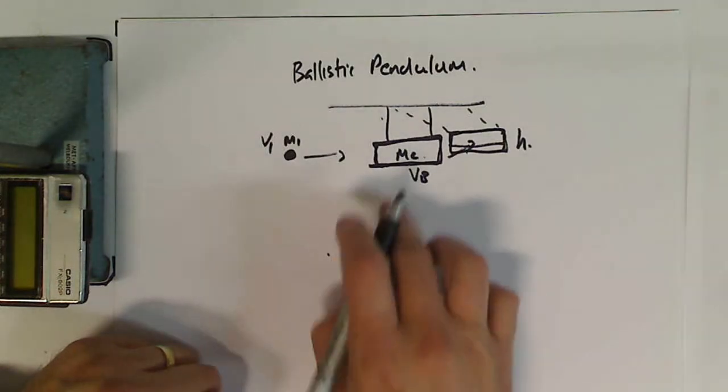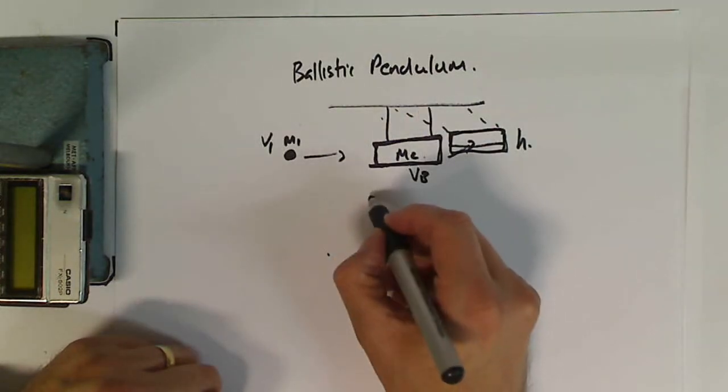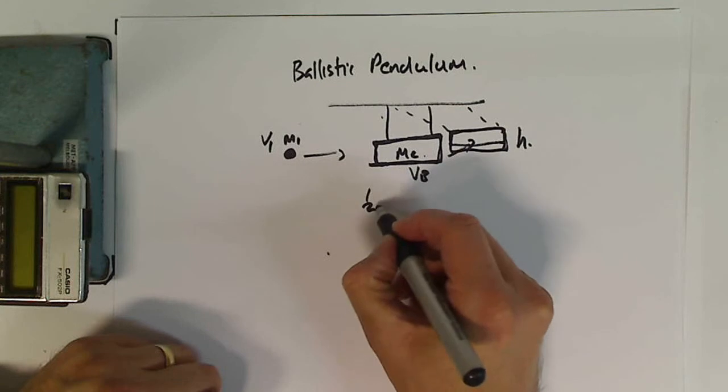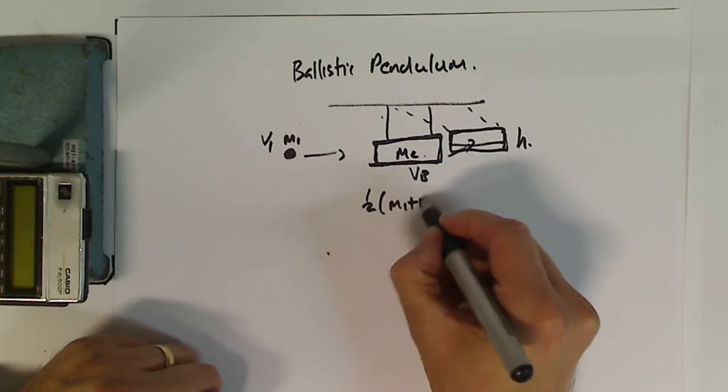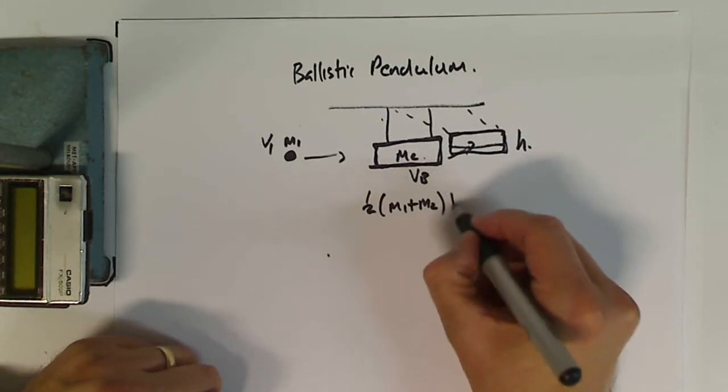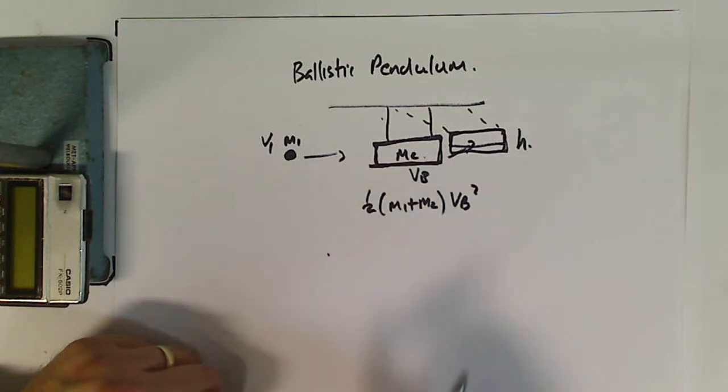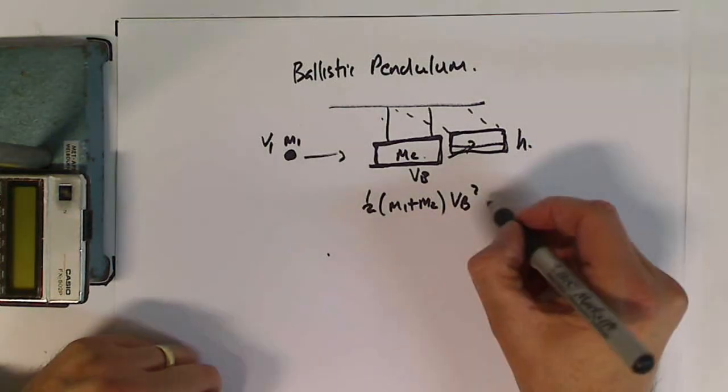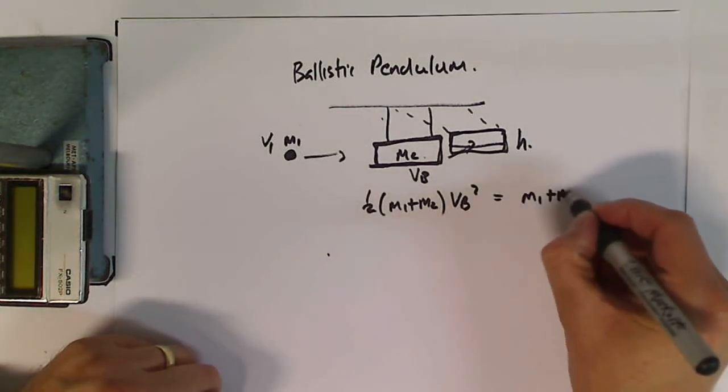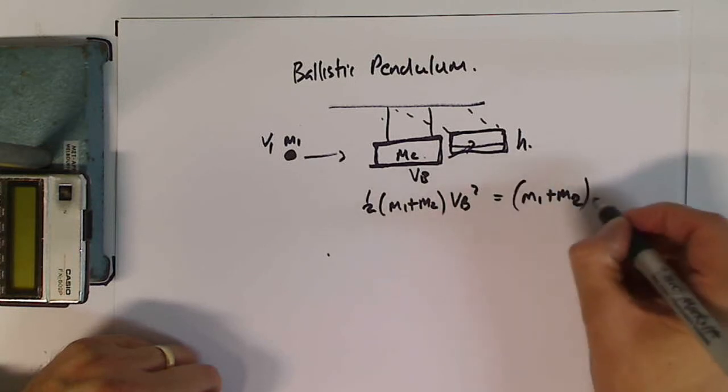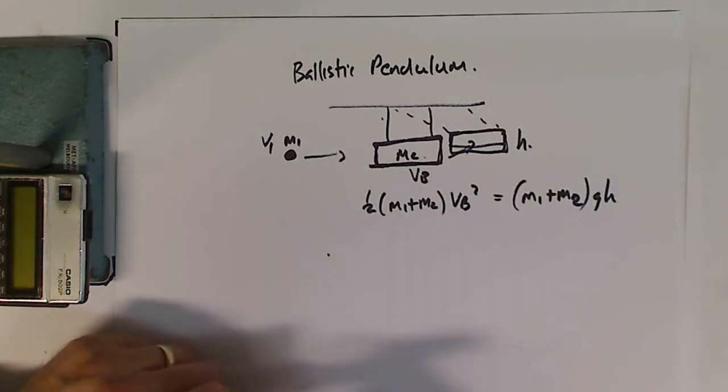One of the first things we can say, basically once the bullet has stuck to it, we can say that one half times (m1 plus m2) times vb squared—that's the kinetic energy once the bullet is stuck—will be equal to (m1 plus m2) times gh. Kinetic energy equals gravitational potential energy.